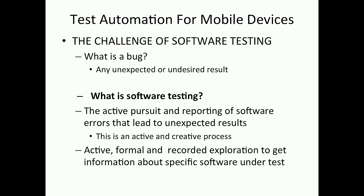But what challenges are we talking about? One thing we don't really talk about is what is a bug? The funny thing is there's no real definition of what a bug is that everybody agrees on. A bug, as I say here, is any unexpected or undesired result. And let's talk about what software testing is — again, there's no real definition for this that everybody agrees on. But it's the active pursuit and reporting of software errors that lead to unexpected results. And to me, this is an active and creative process.